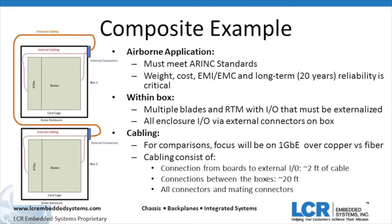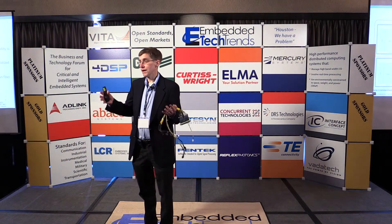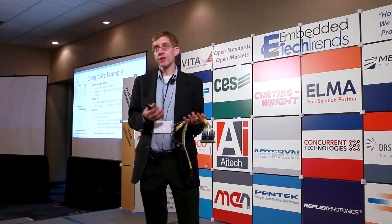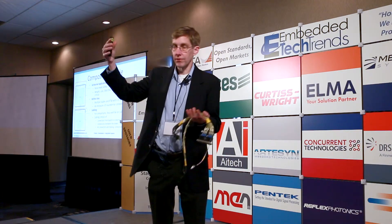So let's get to the composite example. We're going to assume an airborne application, so you need to meet all the ARINC standards. What's critical for these applications is weight — it's really important for airborne. Today, with the push on affordability, cost is always an issue. Within an airplane, especially where the cable routes are, EMI and EMC are very important. And what they really want is long-term reliability — up to 20 years where that same box and same cabling is still working. Within the box, which could be any bladed form factor with multiple blades and potentially RTMs, there will be I/O coming from those, and they will exit the box via a centralized I/O connector on the top of the box or somewhere on the box.